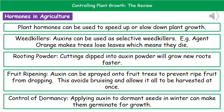We can use plant hormones in agriculture to speed up or slow down plant growth. The first example is weed killers — we can use auxins as selective weed killers. The best example is Agent Orange, used in the Vietnam War, which was sprayed over trees causing them to lose their leaves. Without leaves, the trees couldn't carry out photosynthesis and died.